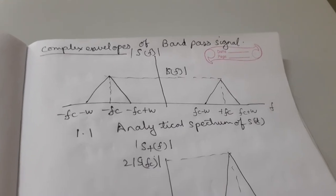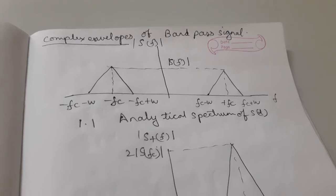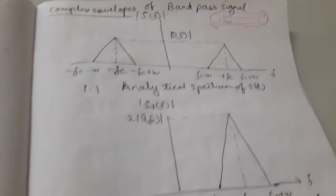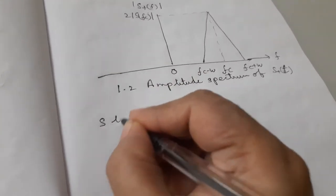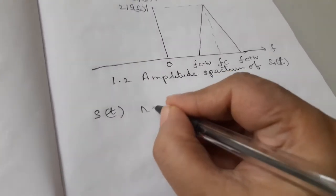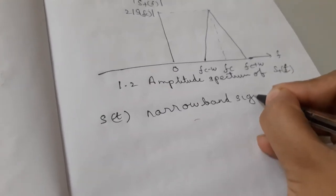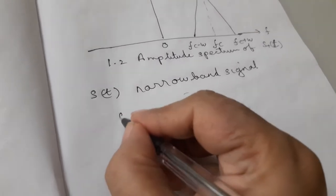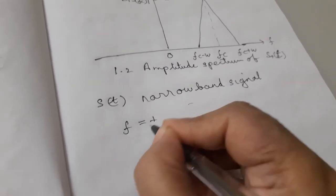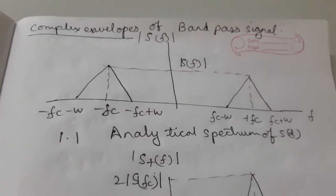Now, let's see the complex envelopes of band pass signal and the Hilbert transform. So, we'll start with it. First, let S of t be the narrow band signal whose spectrum is centered at f equal to plus minus fc. You can see, this is the analytical spectrum of S of t. The spectrum is centered at plus minus fc.